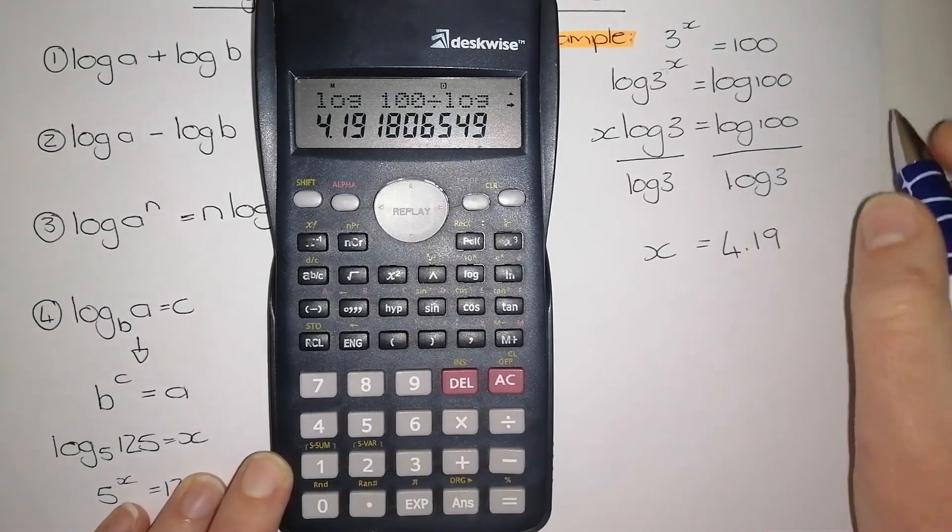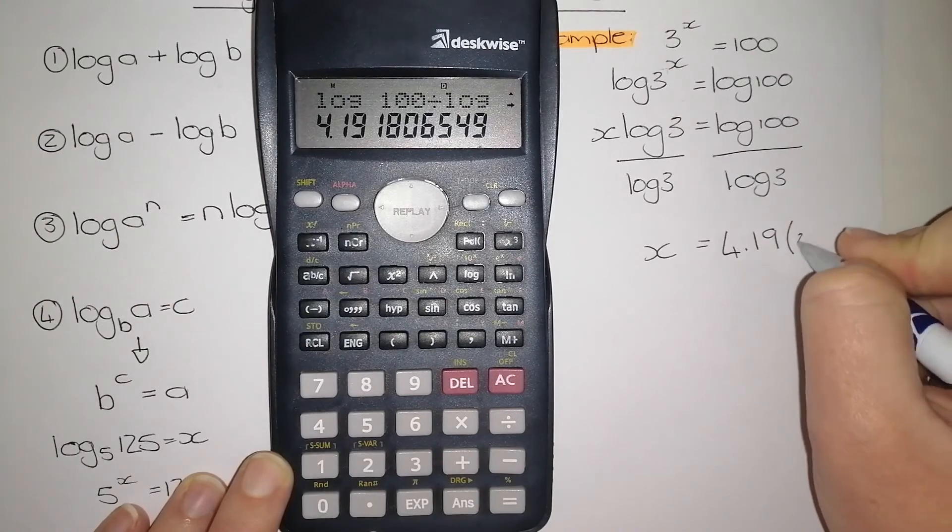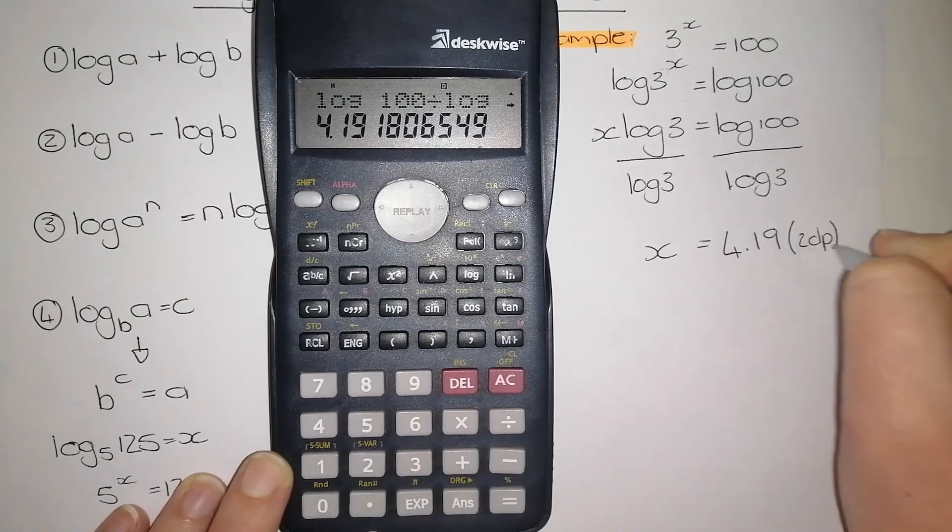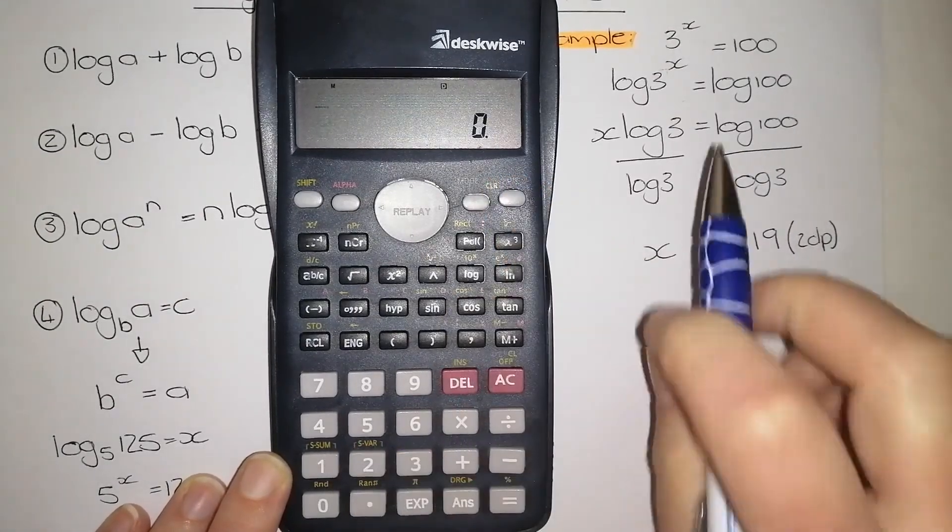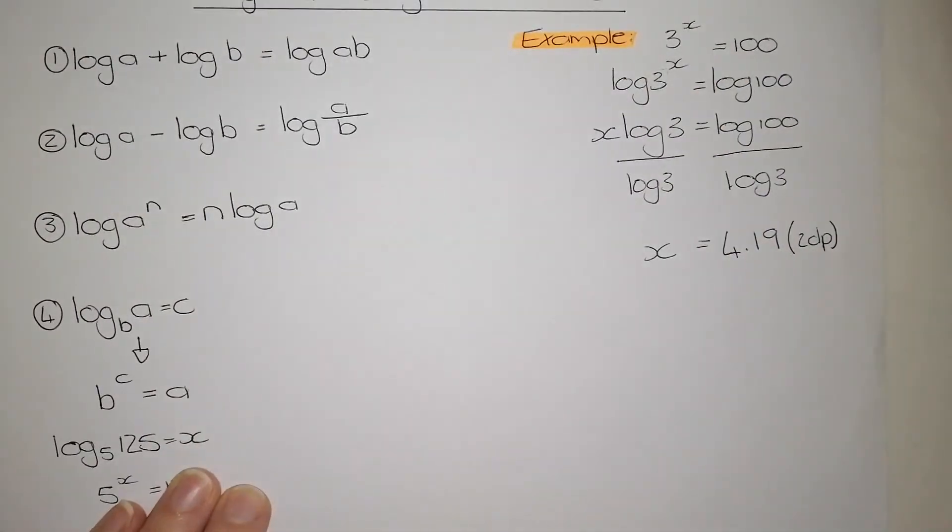Remember the degree of accuracy. In this case, we did 2 decimal places. And that is how we apply the first rule of logarithms.